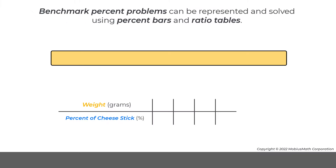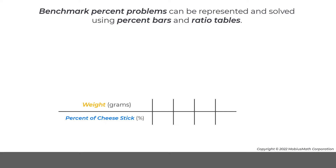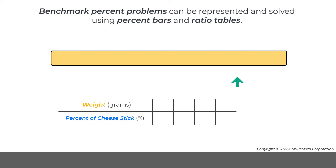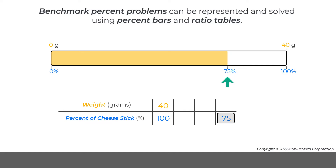Benchmark percent problems can be represented and solved using percent bars and ratio tables. For example, a whole cheese stick or 100% weighs 40 grams. Benchmark percents can be applied to find the weight of 75% of this cheese stick.